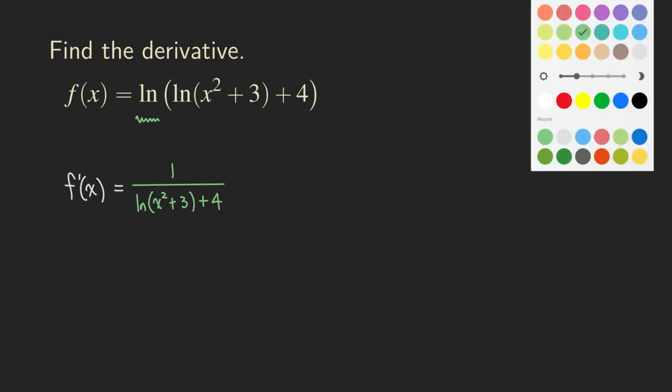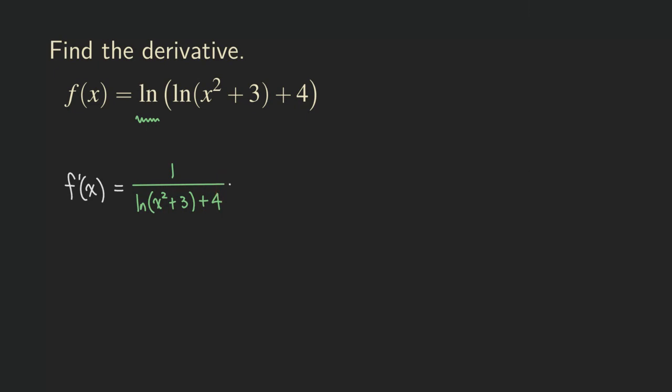And then now times, now multiply by the derivative of this expression right here. So let me put a pair of brackets right here because we may need to use parentheses. We're not sure yet. So if you're not sure, sometimes it's a good idea to just put a pair of brackets or parentheses there just in case.